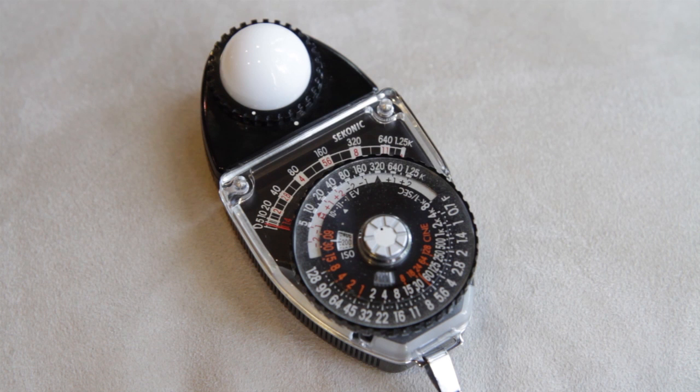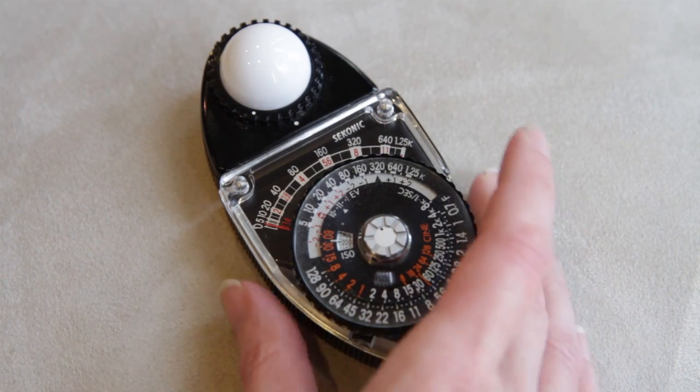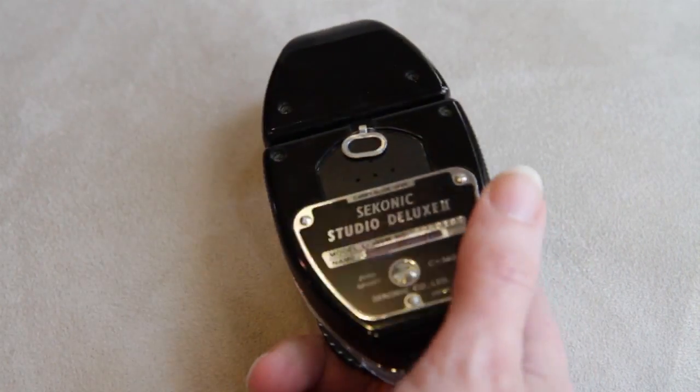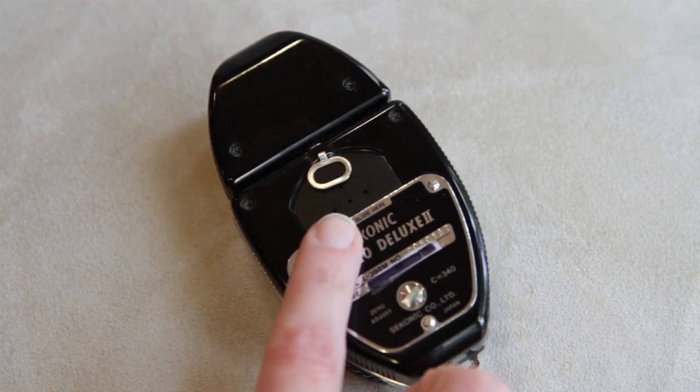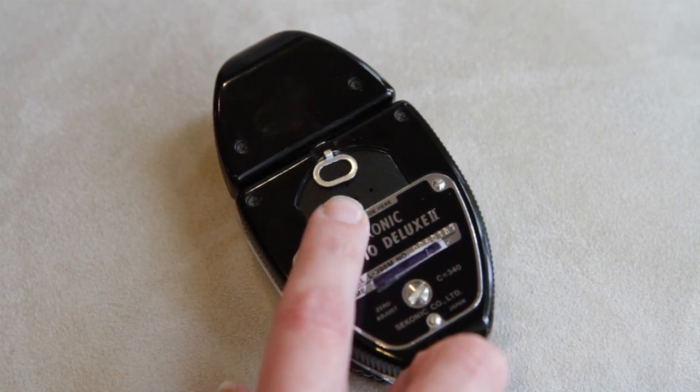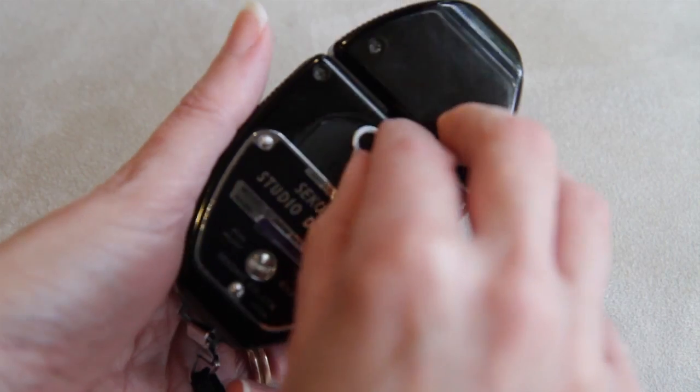You just need to take it out and put it in the light that you want to measure. There are two things you could lose. The first thing is in the back, stored something called the high slide. It's stored back here.